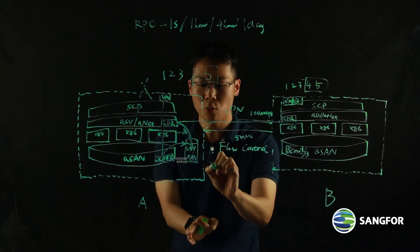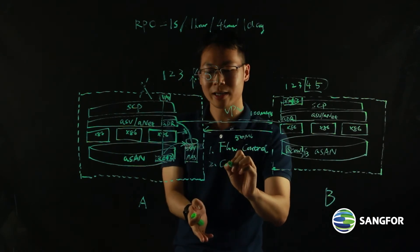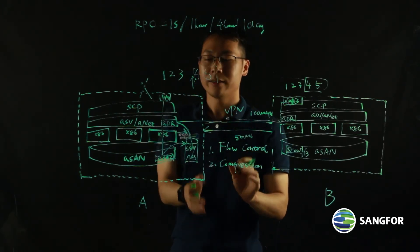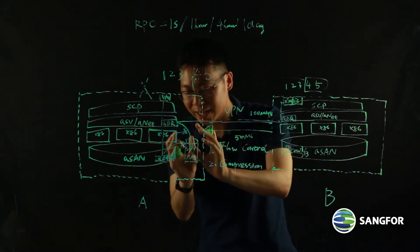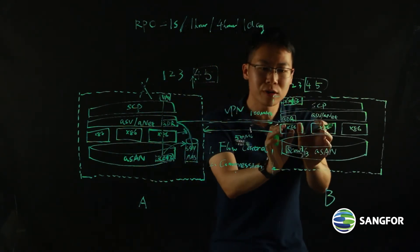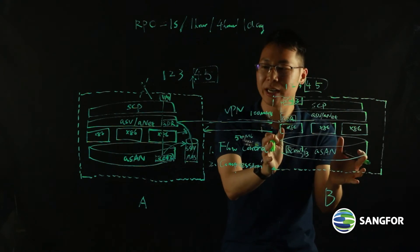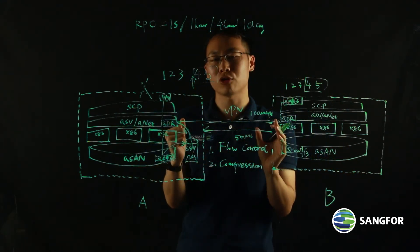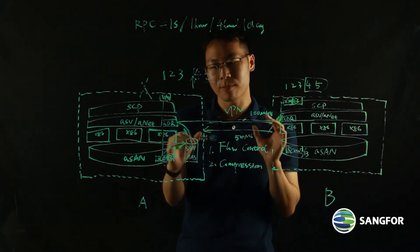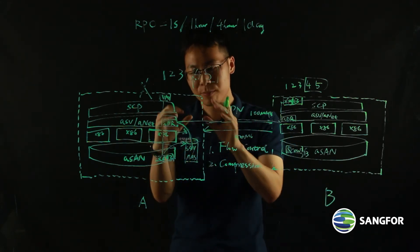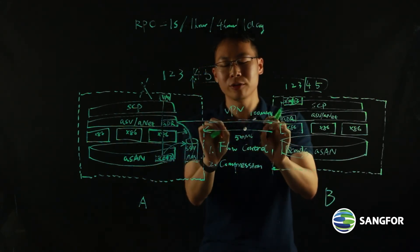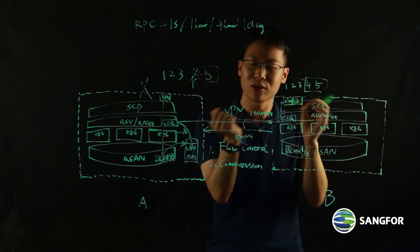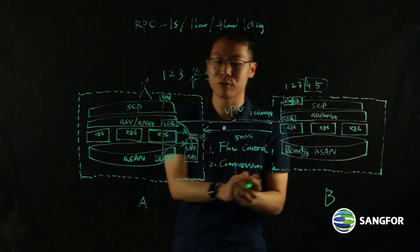And second, we also support link compression. That means the data, the backup data that ADR needs to send over to the secondary site will be compressed first. You need to check that compression box, then the compression will kick in to compress your backup data to make sure to reduce the size that needs to be transferred to the secondary site.